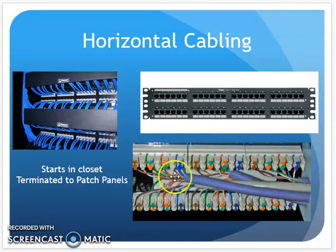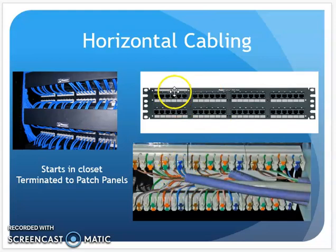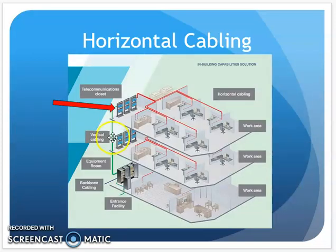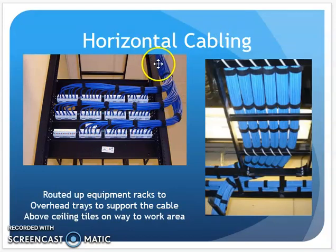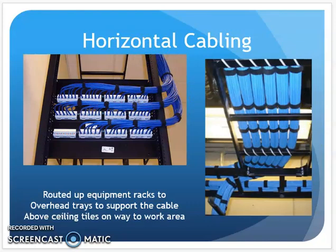The horizontal cabling is typically terminated into the patch panel — here's the back, and here's the front with the ports. Patch cables connect those ports into the switch. That's how horizontal cabling is dealt with: coming down the hall, into the closet, and into the patch panel. This is the kind of cabling you find above the ceiling when you look for it.